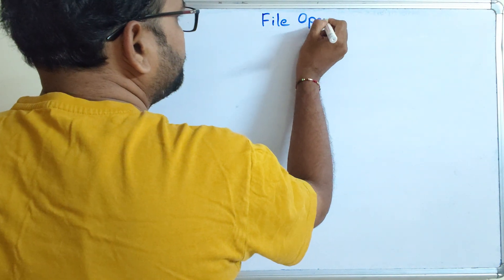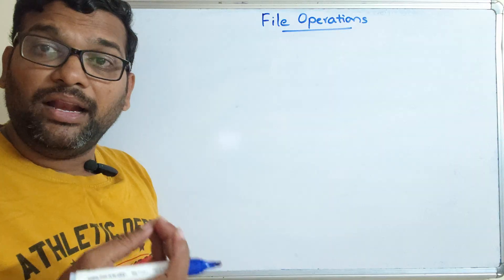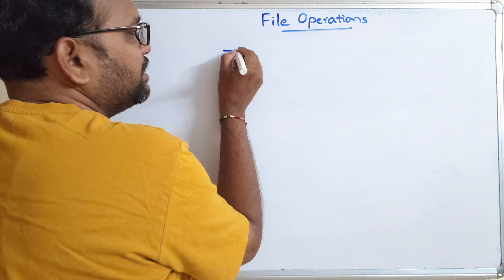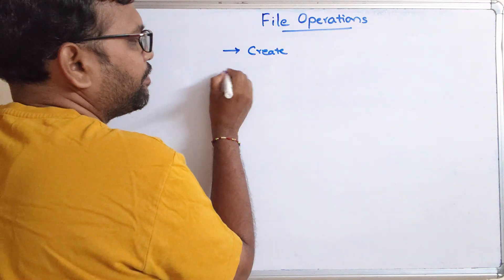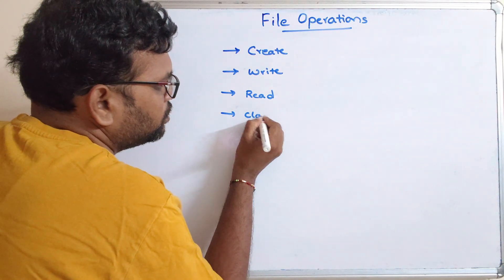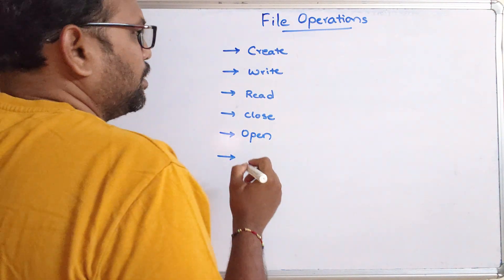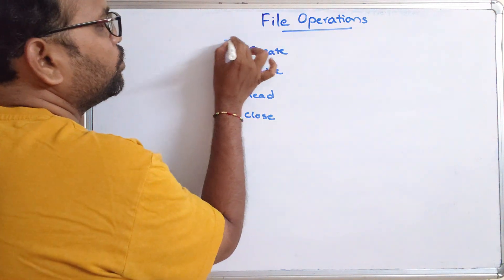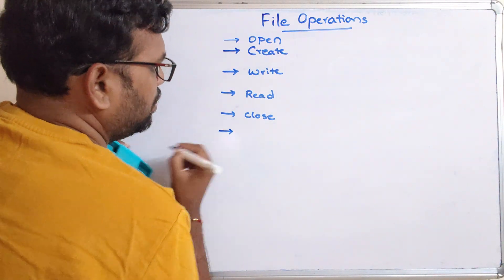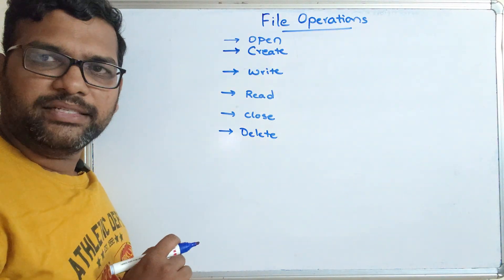We know that a file is a collection of related information which has been stored in secondary storage. The major operations that can be performed on files are: open, create, write, read, close, and delete.